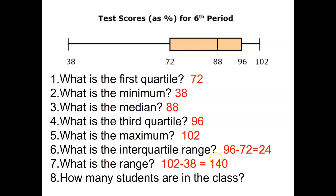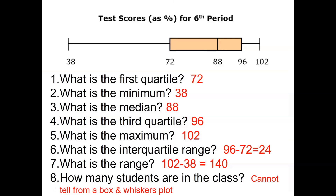There's a typo on this screen — it should say 64, since 102 minus 38 is 64. As for how many students are in the class: we do not know how many people are in the class, so you cannot answer that question. Also note: even though the purple whisker is longer than the red whisker, it just means the bottom 25% is more spread out than the upper 25%.